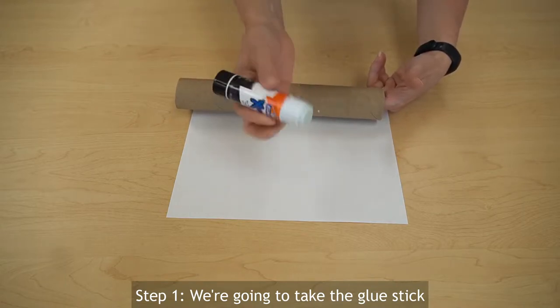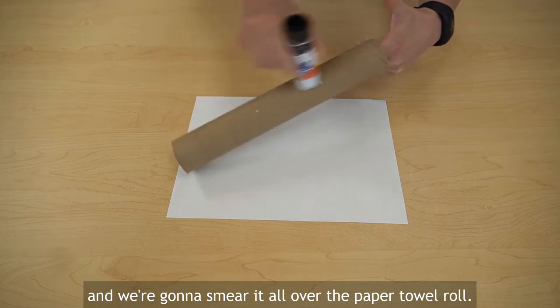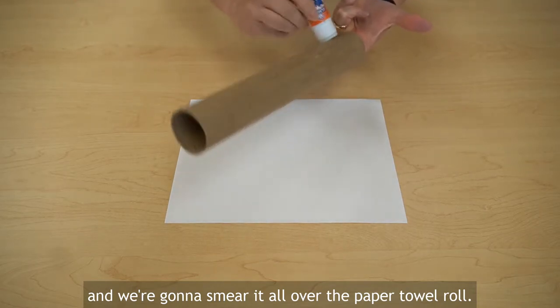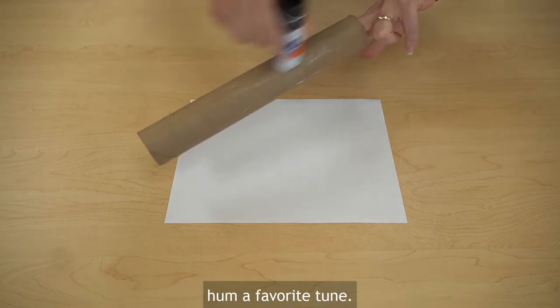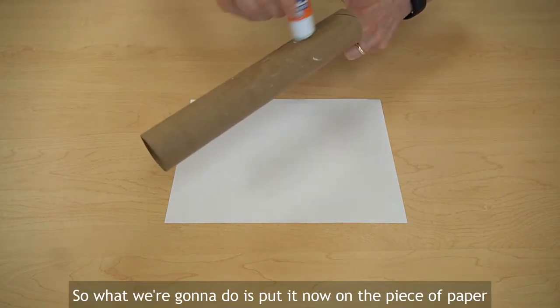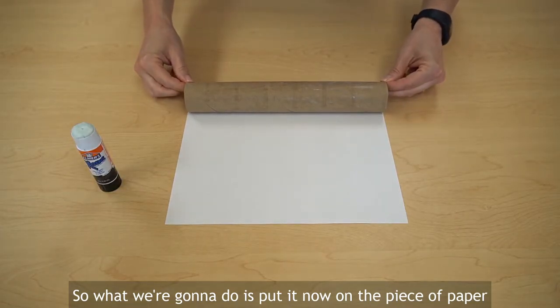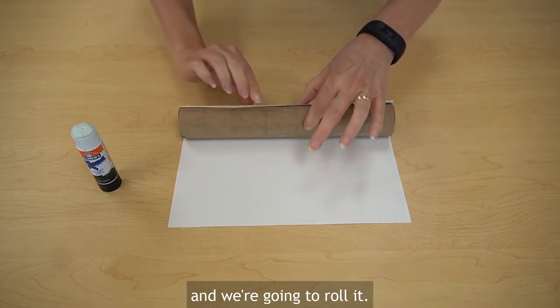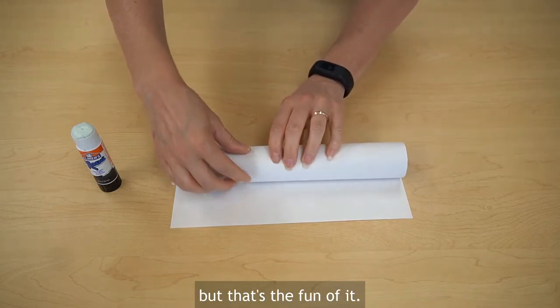Step one, we're gonna take the glue stick and we're gonna smear it all over the paper towel roll. And always remember when you're doing this, hum a favorite tune. So what we're gonna do is put it now on the piece of paper and we're gonna roll it, and your fingers might get a little sticky but that's the fun of it.